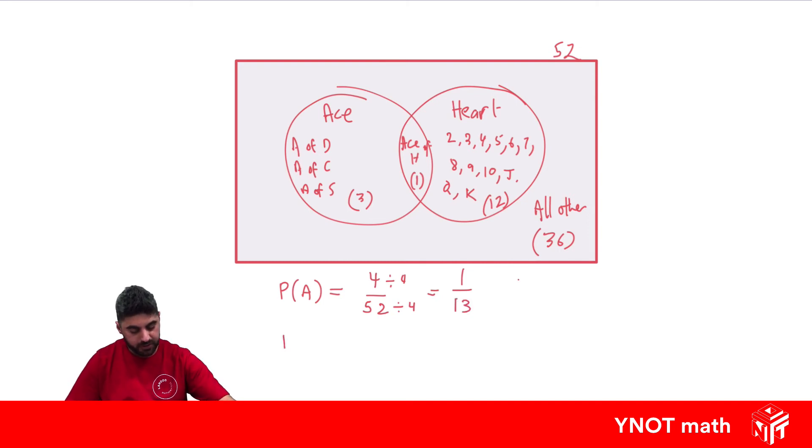What about the probability of getting a heart? Well, we know we can look in the heart category and know there's 13 hearts. So it's 13 out of 52. These are both divisible by 13 to simplify our fraction. So we get one out of four.